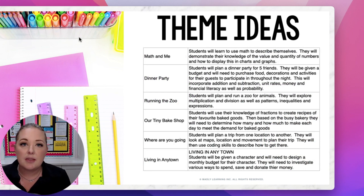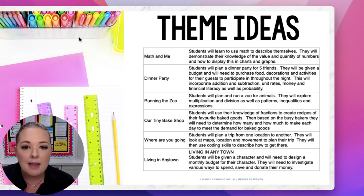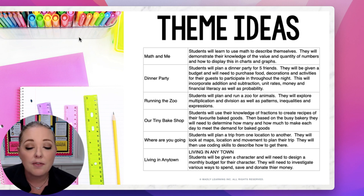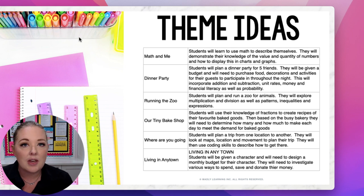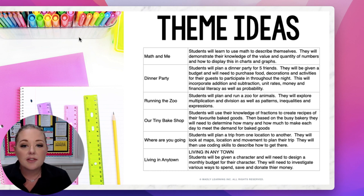When thinking of big project ideas, some themes I use in my own spiraled approach include 'Math and Me,' where students learn math to describe themselves and demonstrate knowledge of value, quantity of numbers, and display data in charts and graphs. You can also have students plan a 'Dinner Party' for friends with a given budget to purchase food and decorations — hitting on financial literacy, number sense, and decimals. Students can also plan an itinerary, participate in activities throughout the night, and complete a survey incorporating addition, subtraction, unit rates, money, financial literacy, and probability.